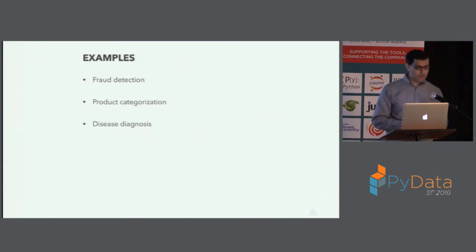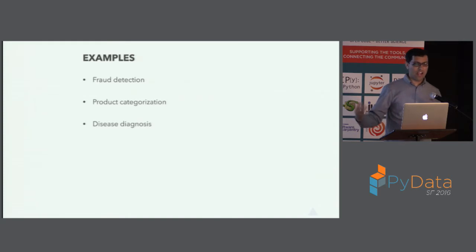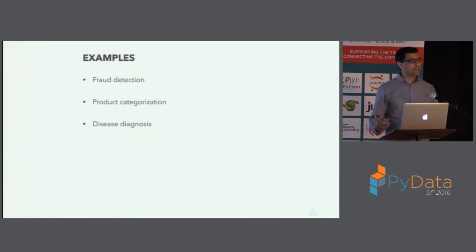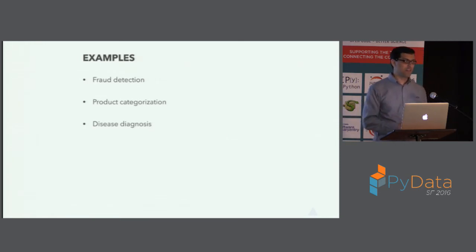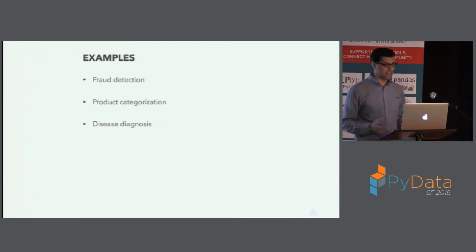Another example would be disease diagnosis. It's a fair assumption that for any given disease, most people are healthy, and the fraction who have the disease is typically small. There are a lot of examples like this — if you browse the UCI machine learning dataset repository, you'll see many examples of unbalanced datasets.